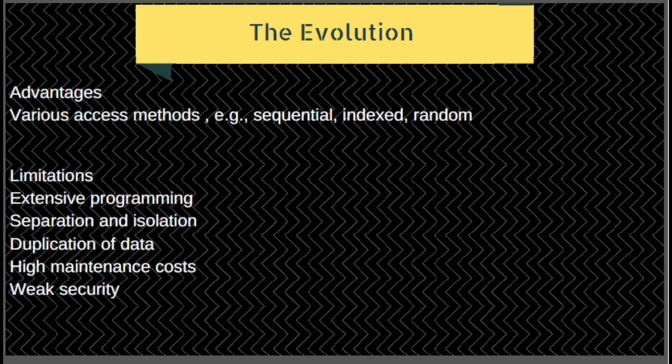Advantages of the file-based system can be grouped as various access methods such as sequential, indexed, and random. However, there are several limitations. First, it requires extensive programming in third-generation languages such as COBOL and Basic. Second, separation and isolation: each program maintains its own set of data, and users of one program may not be aware of data held by other programs.